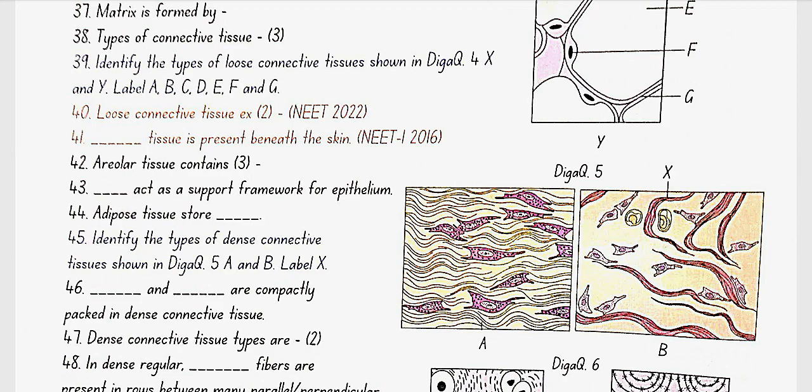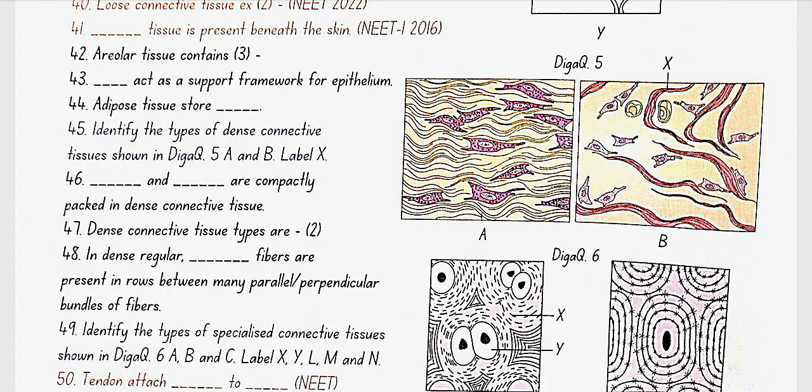Identify the types of dense connective tissue shown in diagram 5, A and B, label X. Here in diagram 5: A is dense regular connective tissue, B is dense irregular, and X is collagen fibers. Fibers and fibroblasts are compactly packed in dense connective tissue. Dense connective tissue types are dense regular and dense irregular.